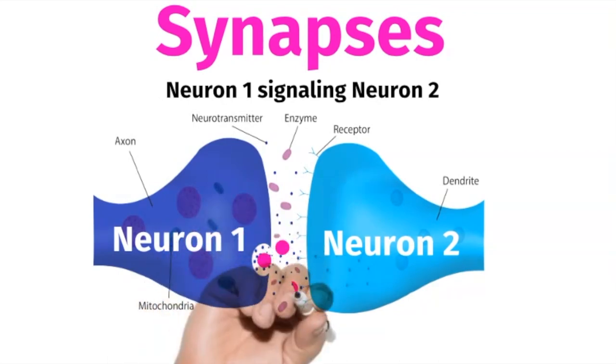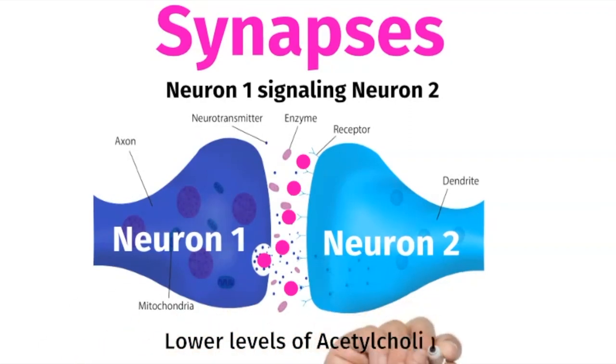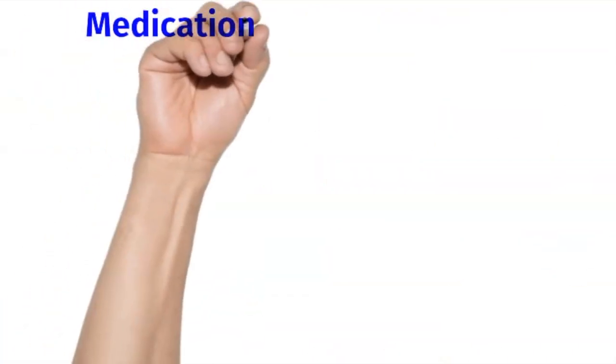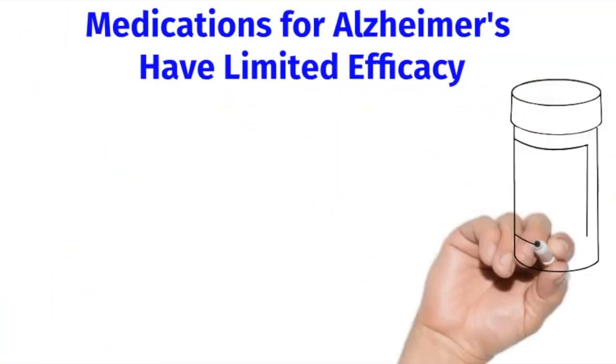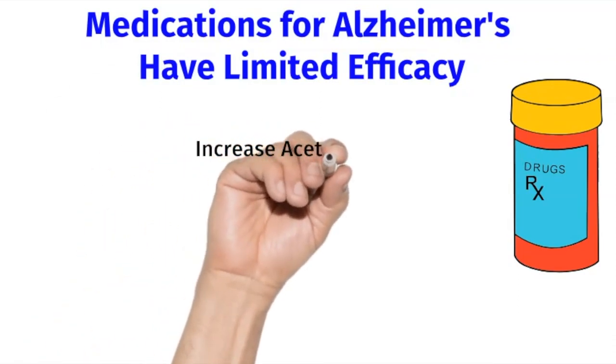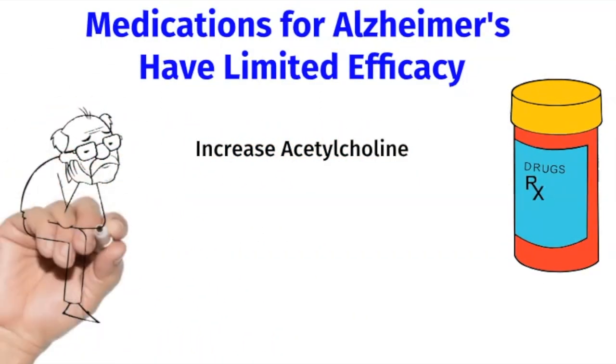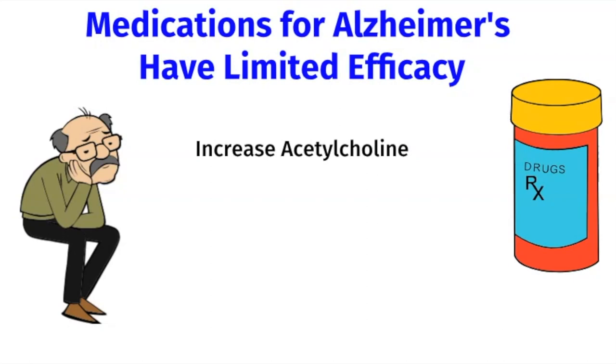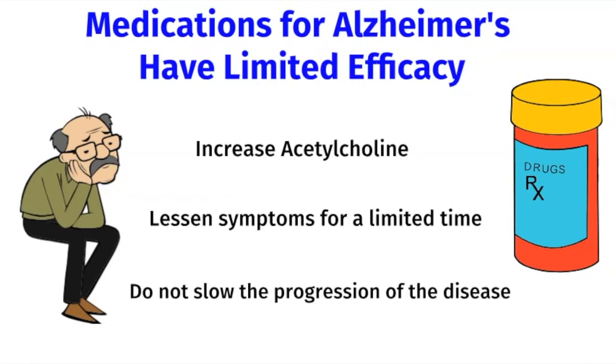Neurons signal each other through chemicals called neurotransmitters. In Alzheimer's disease, there are lower levels of an important neurotransmitter called acetylcholine. Unfortunately, medications that are prescribed for Alzheimer's disease have limited efficacy. Some of them work by increasing the amount of acetylcholine between neurons, but they only lessen symptoms for a limited time, and they do not slow the progression of the disease.